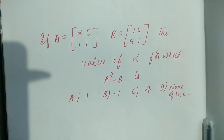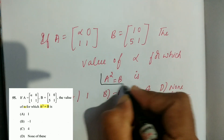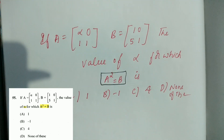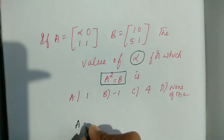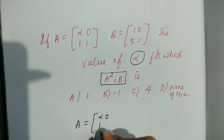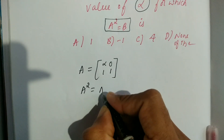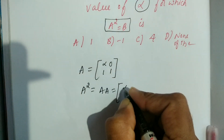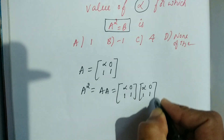In this question, we need to find the alpha value for which A² = B. First, A = [α, 0; 1, 1]. We need to find A² = A × A, which equals [α, 0; 1, 1] × [α, 0; 1, 1].